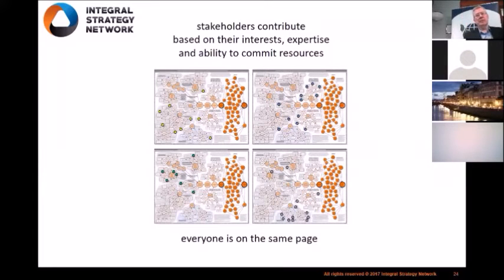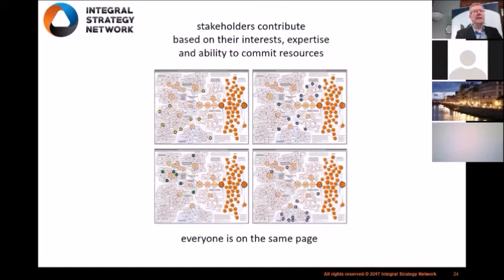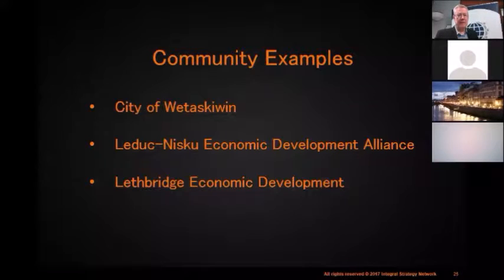Stakeholders contribute based on their interests, expertise, and ability to commit resources. This is really a self-organizing process, and it's amazing to see communities or regions self-organize around a shared purpose. Everyone is on the same page — these four quadrants represent different stakeholders and the place in the system where they have chosen to work, and yet when we all work together, we're working toward achieving a shared result. I'll now introduce Richard Pauls, who will talk about three examples of communities where this has been used.